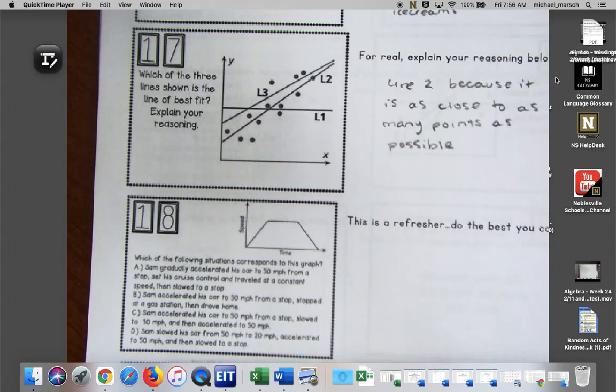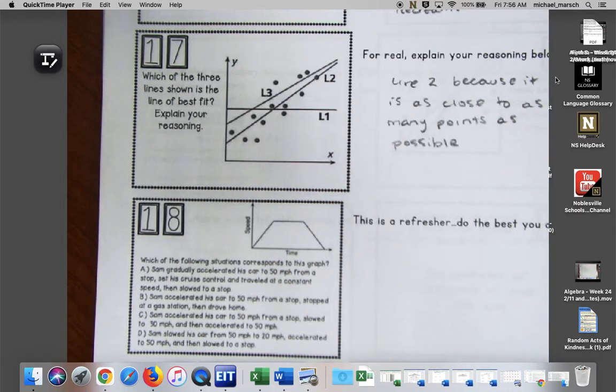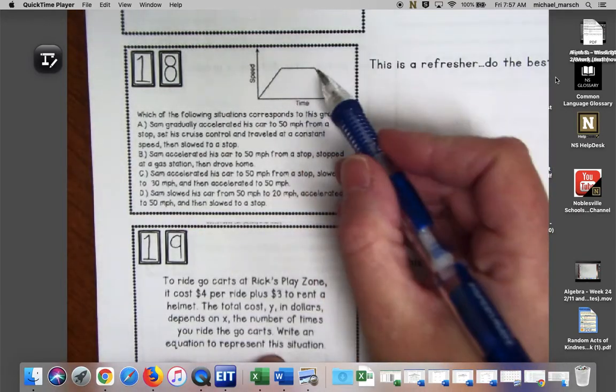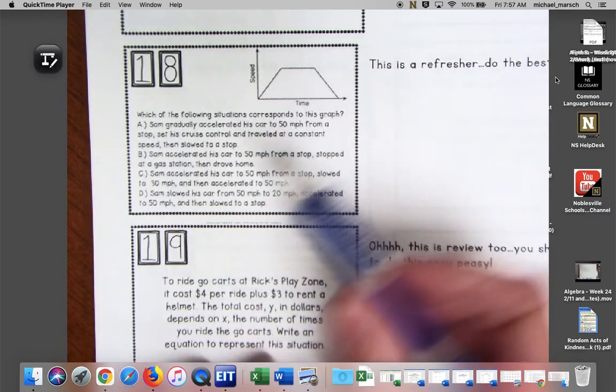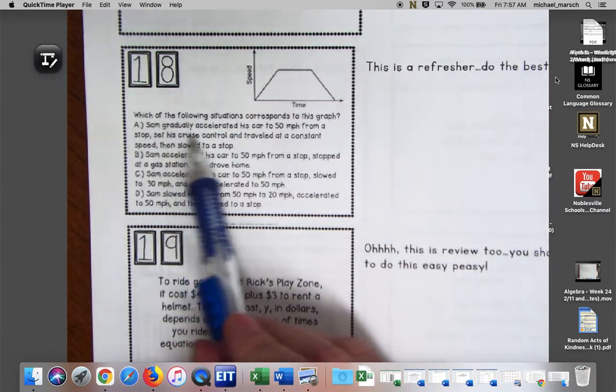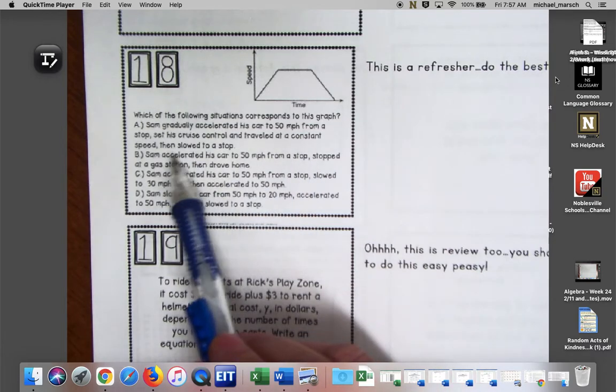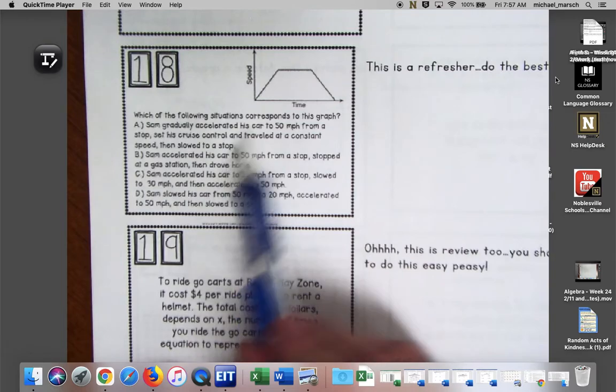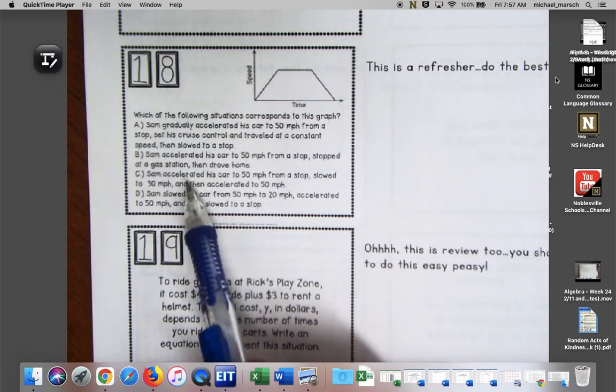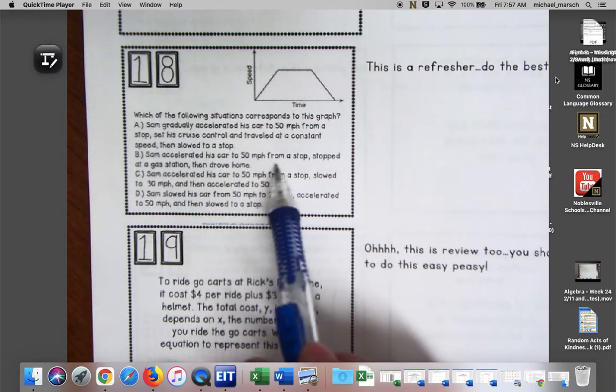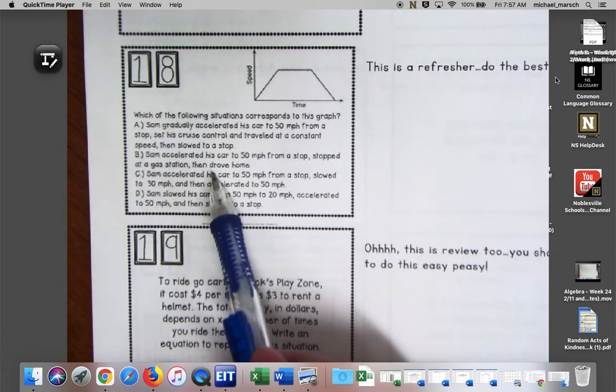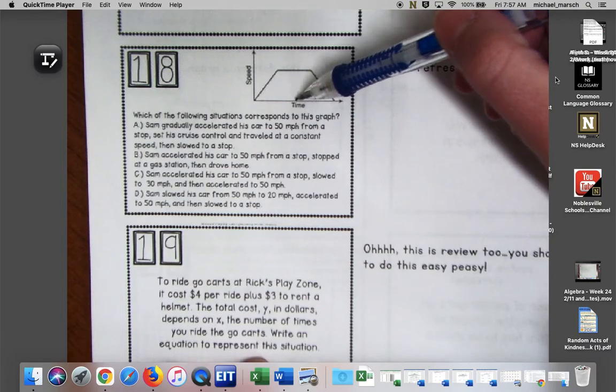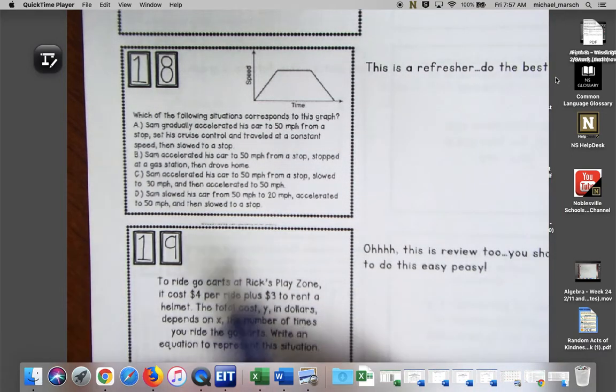Number 18 is another refresher on functions. Which of the following situations corresponds to this graph? What I see happening here is that someone is speeding up and then constant rate and then slowing down. Let's see if we have anything. Sam gradually accelerated his car to 50 miles per hour from a stop, set his cruise control and traveled at a constant speed, then slowed to a stop. That could be it, so A is a contender.